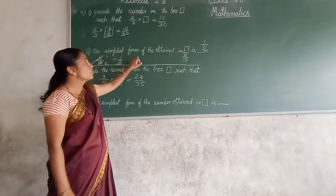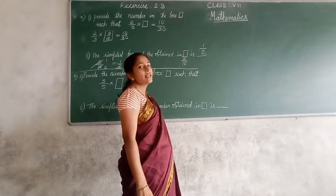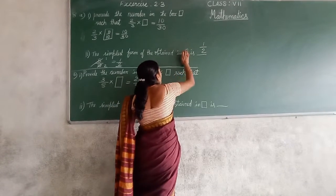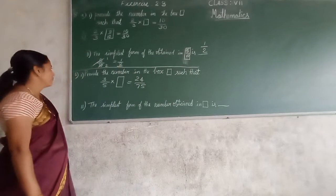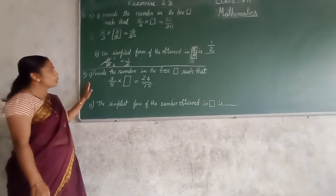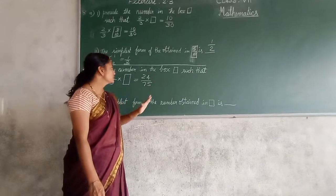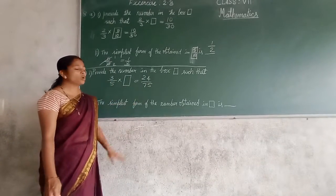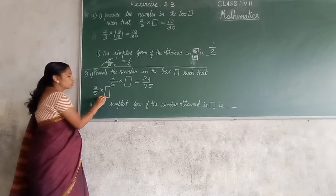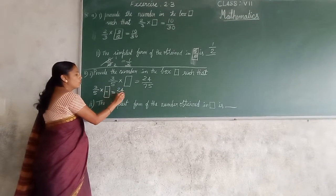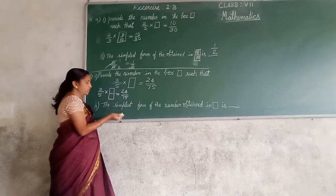The simplest form of the number obtained in the box is 5 upon 10, that is half. You can write 5 upon 10 in the box; the simplest form is half. Now the second question: provide the number in the box such that 3 upon 5 multiplied by what is equal to 24 upon 75.